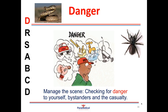Danger is anything that could cause harm to yourself, a bystander or a casualty. You are the most important person on scene — if you don't stay safe you can become another casualty. Take a few seconds to think about possible dangers in your environment. Dangers can include animals, insects, cables, electricity, motor vehicles, other people, needles, water spills and many other things. If the scene is unsafe and you cannot contain the hazard or move the patient, call the appropriate authorities and wait in a safe place.